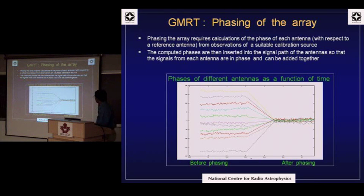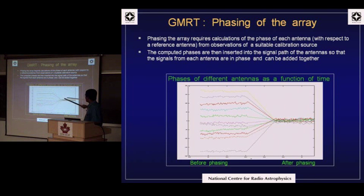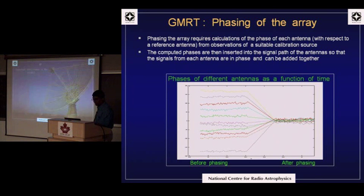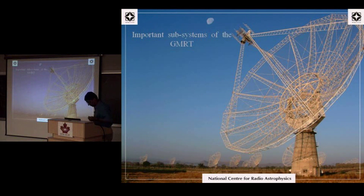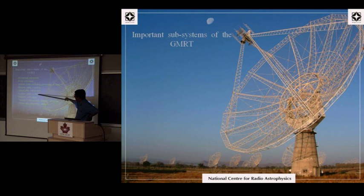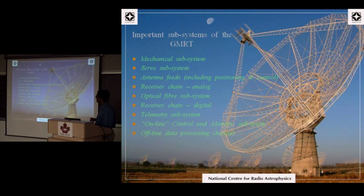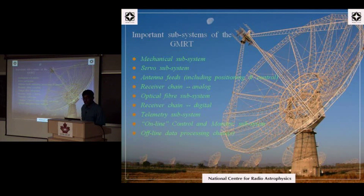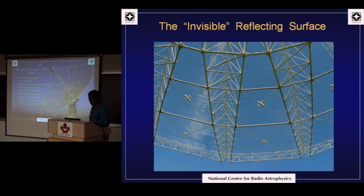This is an example of the phasing operation where signals from different antennas have to be calibrated and brought to zero relative phase before you can add the voltages. In order to make these different modes of the GMRT work, there are different subsystems. I'll concentrate more on the receiver - the analog and digital receiver chains - because that really decides the kind of processing and observations that are feasible. Behind it are also mechanical, servo, and real-time control and monitoring software.